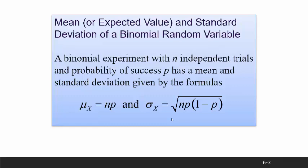The mean, or expected value, and standard deviation of a binomial random variable are given by the following formulas, which are incredibly easy to compute. A binomial experiment with n independent trials and probability of success p has a mean, denoted mu sub x, equal to n times p. The standard deviation, sigma sub x, is the square root of n times p times 1 minus p.